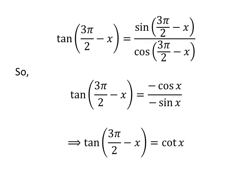The minus signs in the numerator and denominator cancel out, and cos(x)/sin(x) = cot(x). Therefore, tan(3π/2 - x) = cot(x).